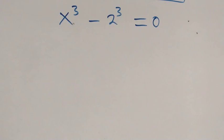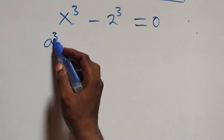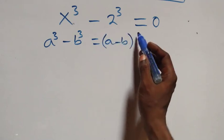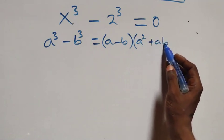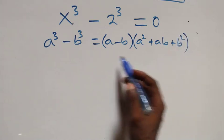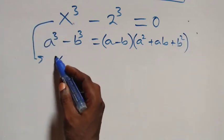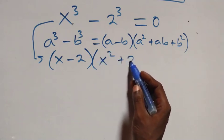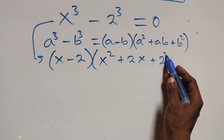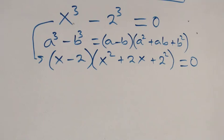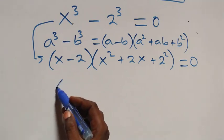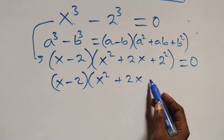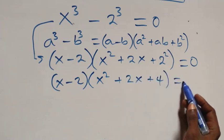Now solving the second case using the difference of cubes formula: a³ - b³ = (a - b)(a² + ab + b²). Applying this, we get (x - 2)(x² + 2x + 4) = 0, which equals zero.